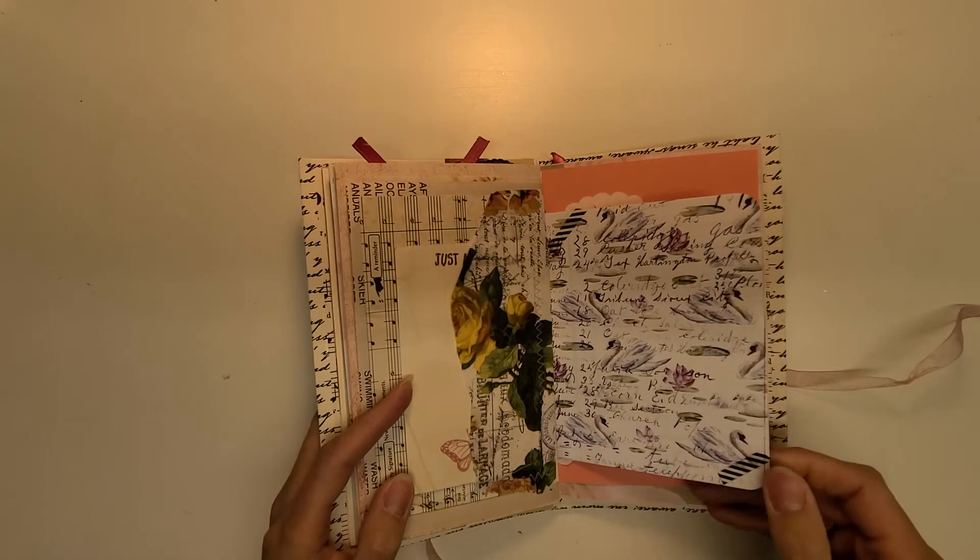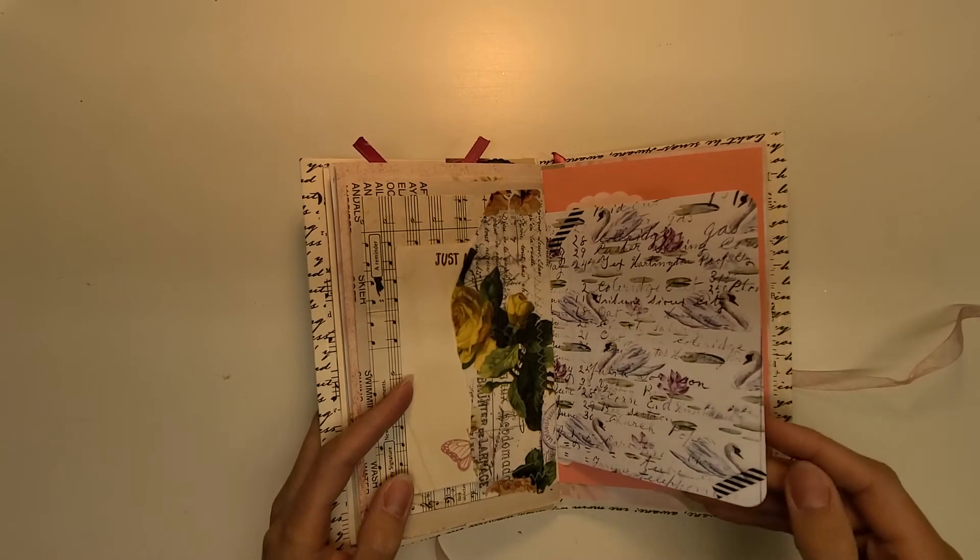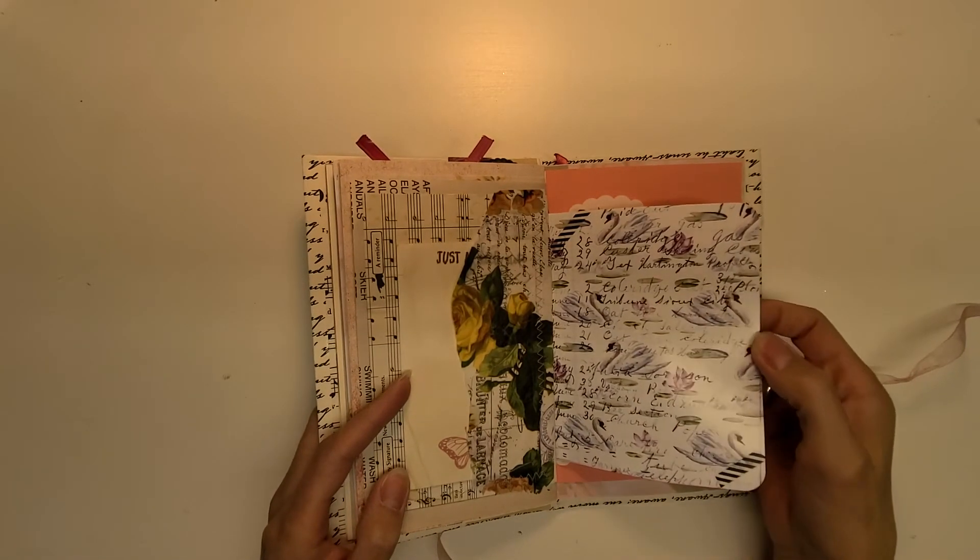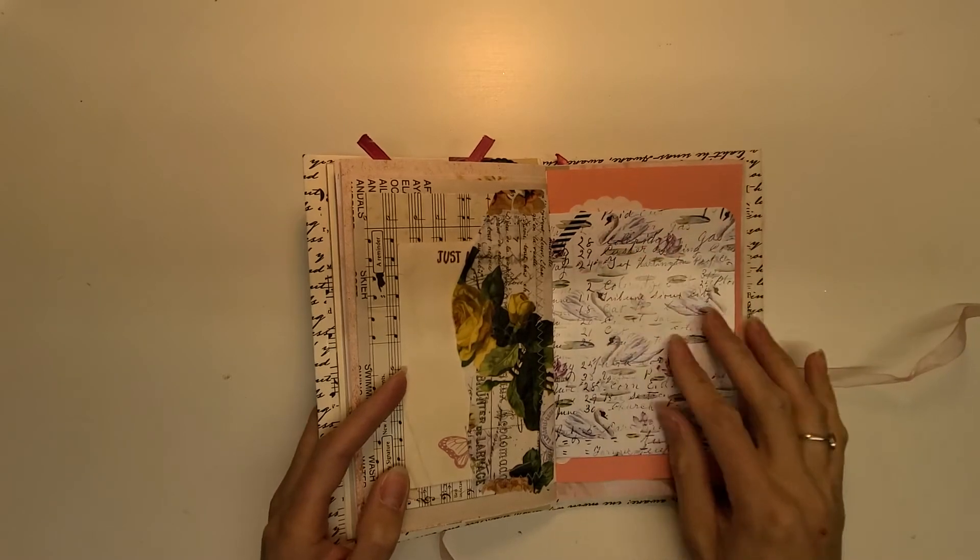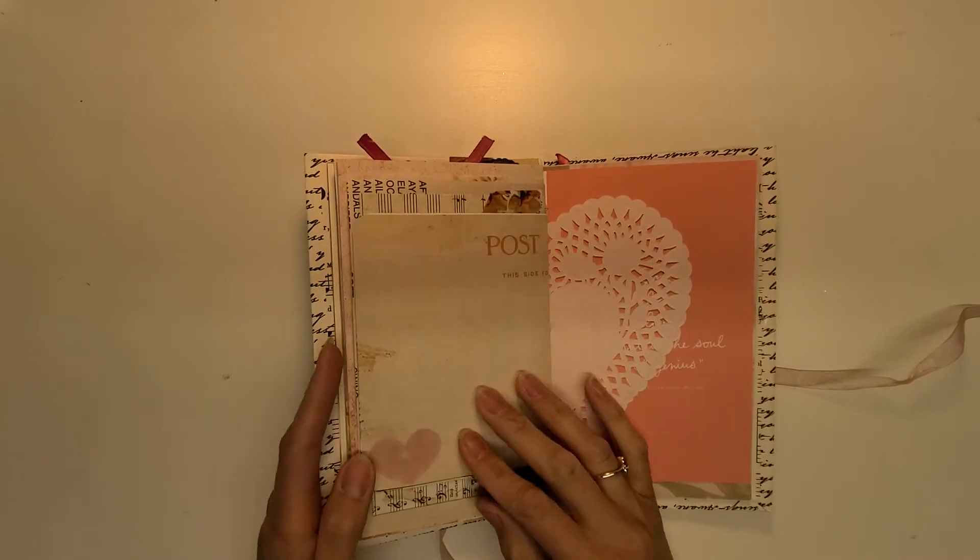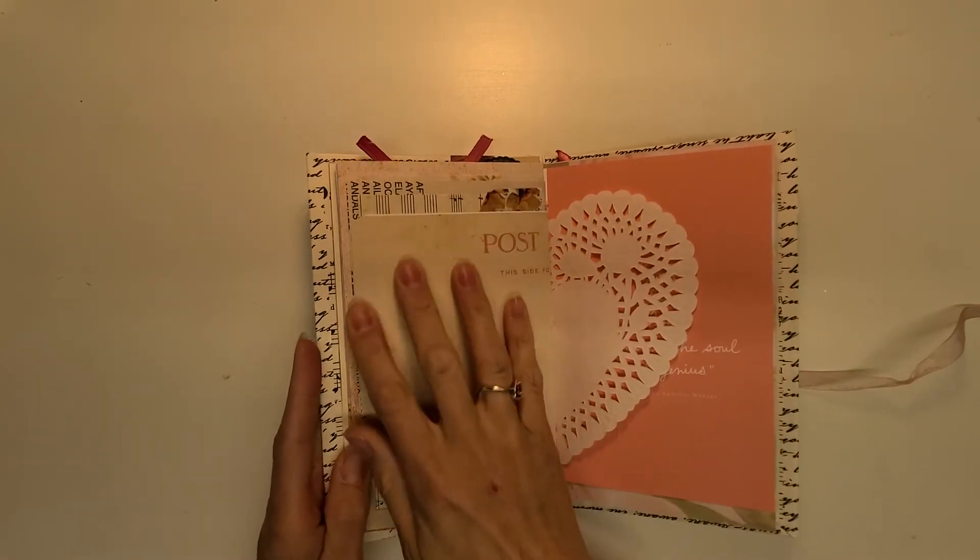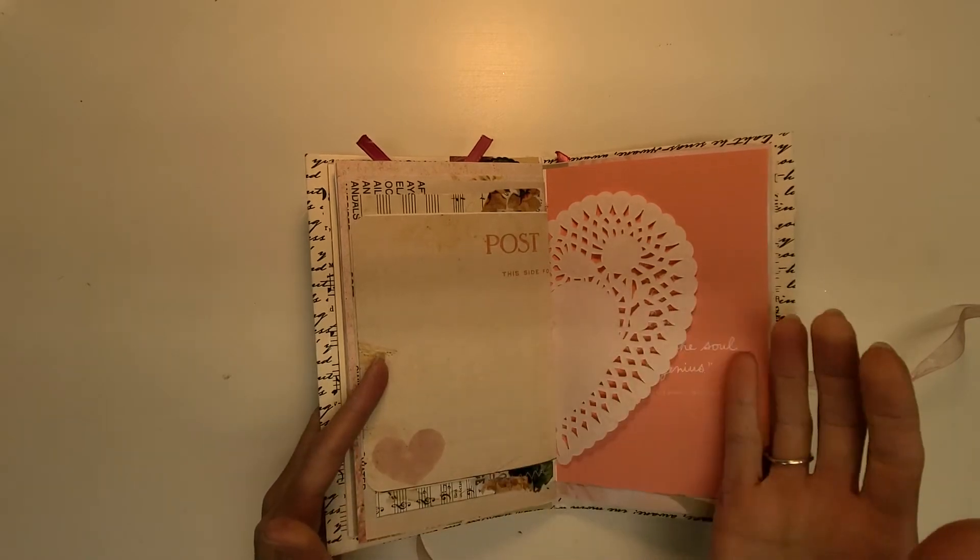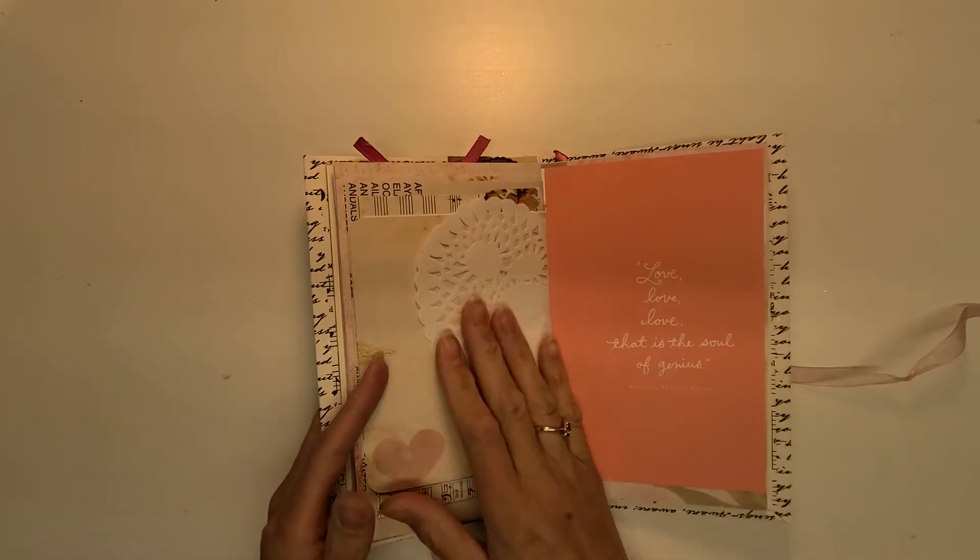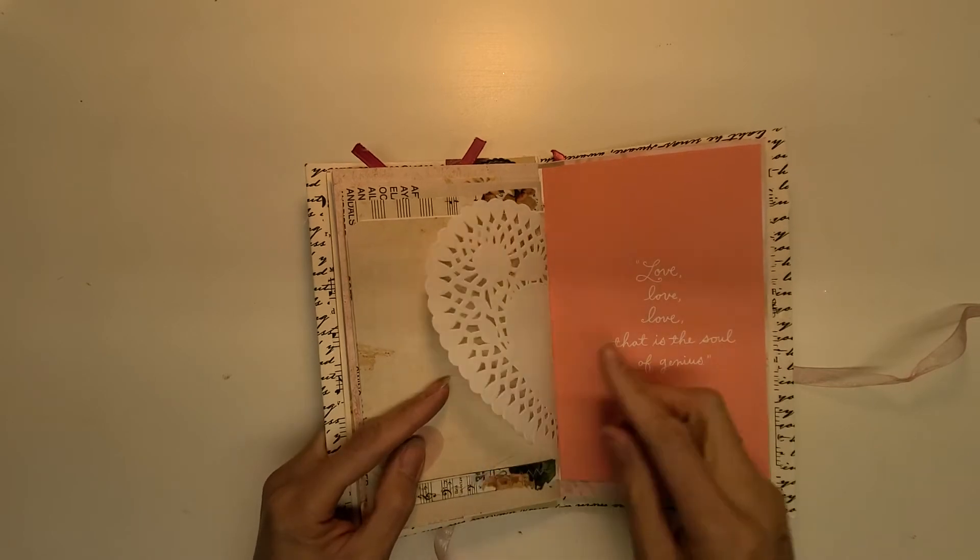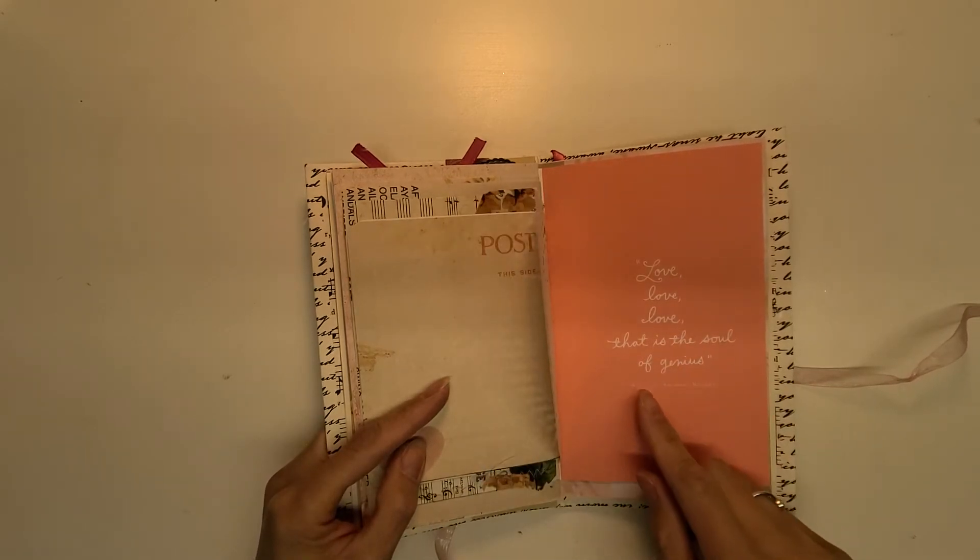And then we have some more washi tape with swans. This is a Lindsey's and Nor paper and I put this on photo paper so it's really really thick and sturdy and glossy and it gives it a whole nother feel to the journal itself. And then I backed it where you would be able to write because you're not going to be able to write very well on gloss paper. There's the rest of our heart doily and it says 'love love love that is the soul of genius.'